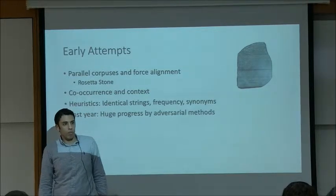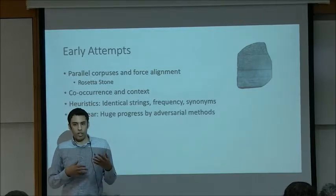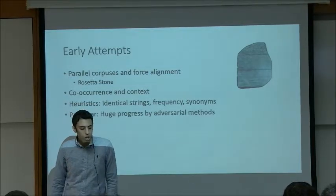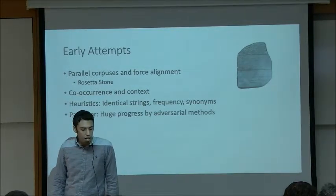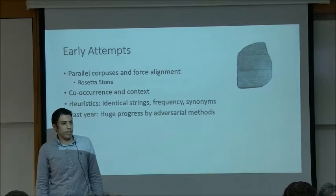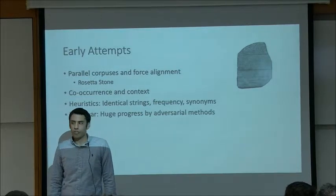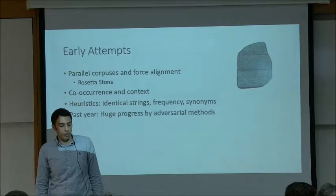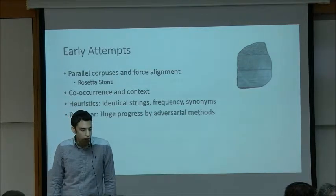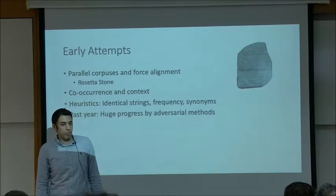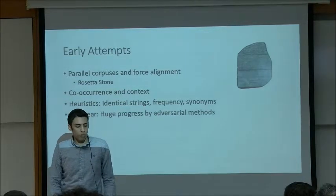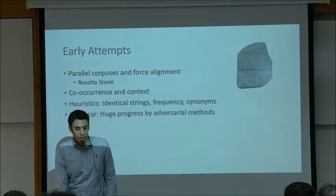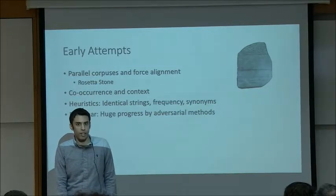More recent work tried to do this for non-parallel text corpora. Some previous work used co-occurrence and context, and other work used heuristics such as finding identical matching strings, using word frequency, and using synonymous words. We do not use these heuristics in this work. Over the past year, amazing progress was made using adversarial methods for unsupervised translation. We do not use adversarial methods and show that our method works better.